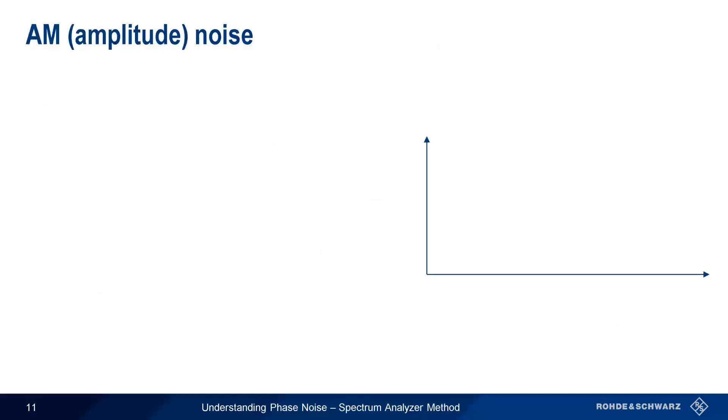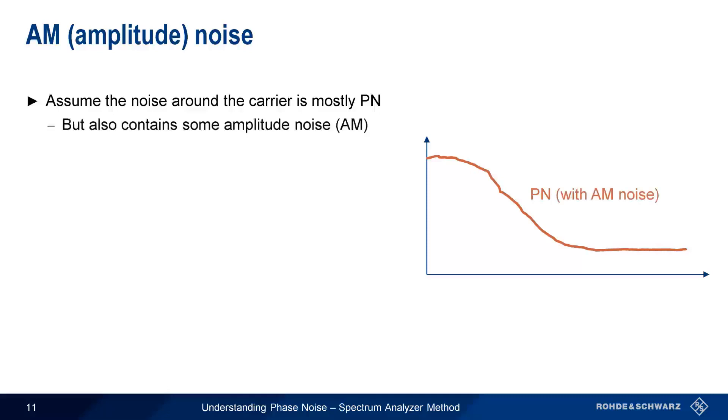The same IQ mode is also useful when it comes to AM or amplitude noise. When measuring phase noise, we assume that the noise sidebands around the carrier are mostly due to phase noise, but with some amount of amplitude noise mixed in. And, in general, this is a valid assumption; the AM noise in real-world devices is usually much less than the phase noise. In some cases, however, this may not be true.